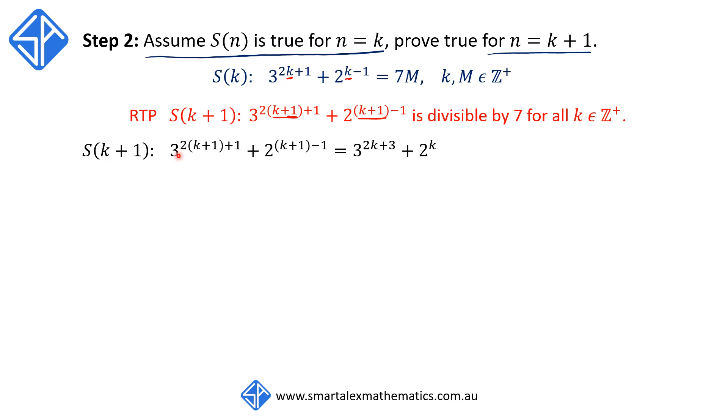So S(k plus 1) can be written as 3 to the power of 2k plus 1 plus 1 plus 2 to the power of k plus 1 minus 1, which simplifies to 3 to the power of 2k plus 3 plus 2 to the power of k. And using the index law, we can express this as 3 to the 2k plus 1 times 3 squared plus 2 to the k minus 1 times 2 to the 1.